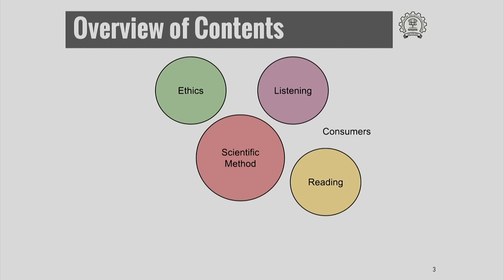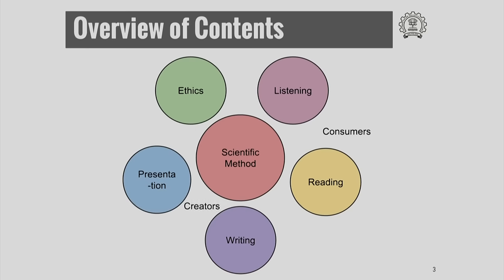Then comes listening and reading. Listening and reading are the first forms of technical communication that we are used to. When we begin to attend lectures or when we read books or papers, we are consumers of technical information. And then comes writing and presentation. When we write or present something, we already become creators of information. We have carried out a project, done a procedure, and we want to explain or tell the world what we have done. So from consumers — which is listening and reading — to creators — which is writing and presentation.